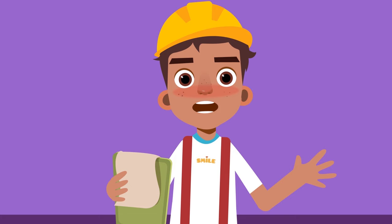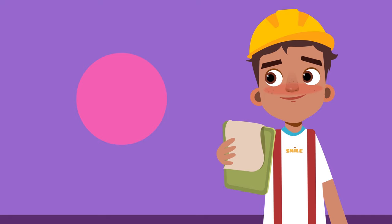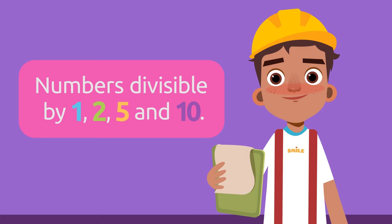Each number has its own divisibility rule. Some are based on adding all the digits. For others, you have to look at the last digits, and some can be done by doing several simple operations. Today we'll talk about the numbers divisible by one, two, five, and ten.